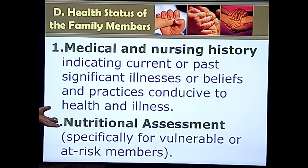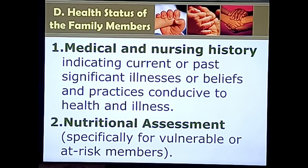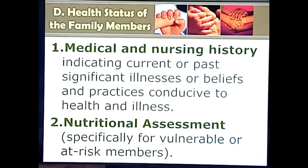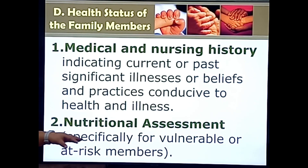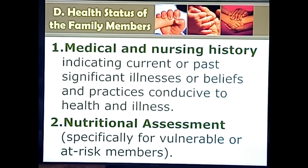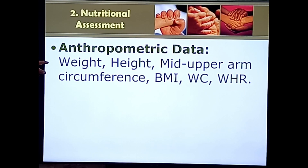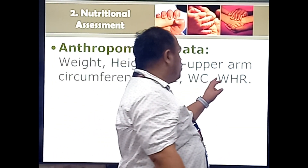Diet is also described — the types of food the family eats and their eating patterns, including how many times a day they eat. Physical assessment measurements include weight, height, mid-upper arm circumference (MUAC), BMI, waist circumference, and waist-to-hip ratio. MUAC is particularly useful for children: a small or wasted upper arm indicates muscle wasting, a common finding in marasmus, which is caloric or protein deficiency.